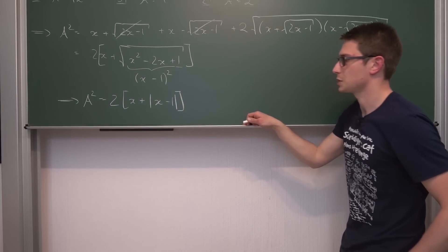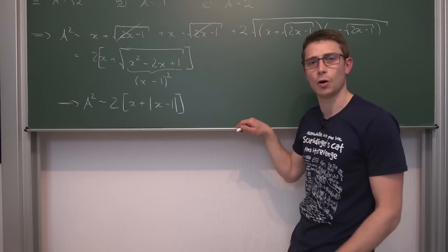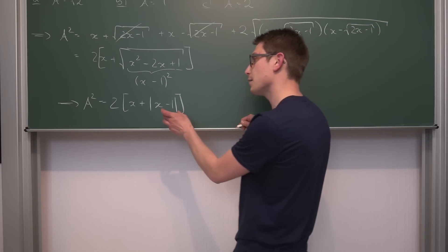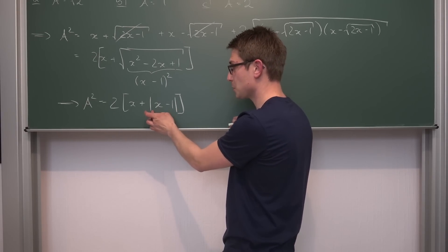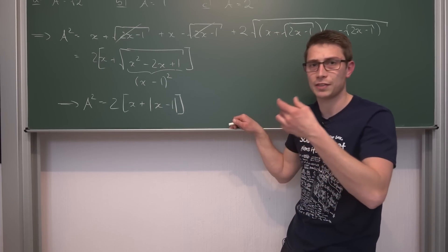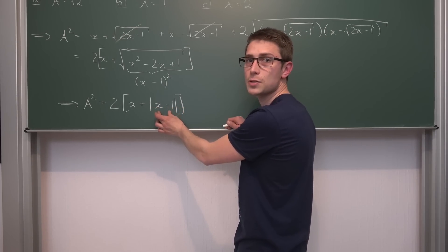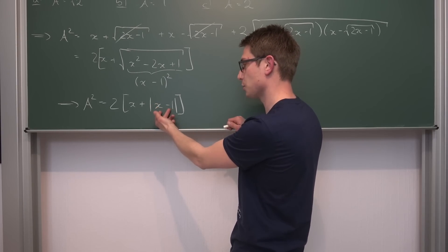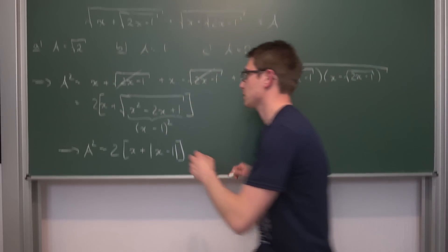So we have absolute values. Absolute values consist of two cases: either the expression inside the absolute value is positive — in which case the absolute value is just that positive thing — or the expression inside is negative, in which case we take the negative branch, turning x minus 1 into 1 minus x. So let's consider two cases.